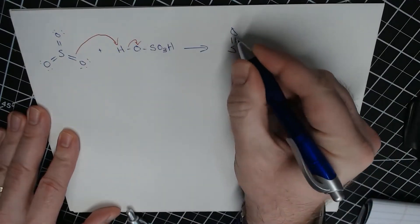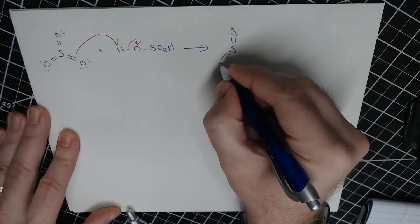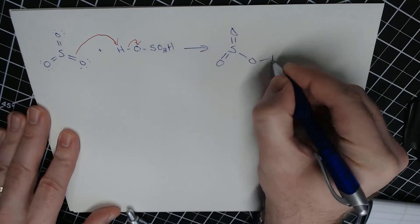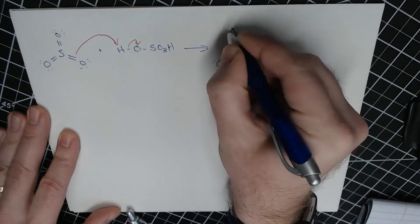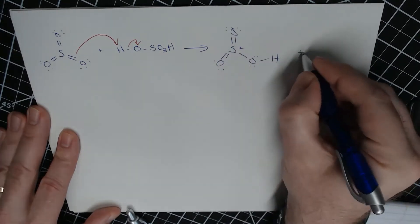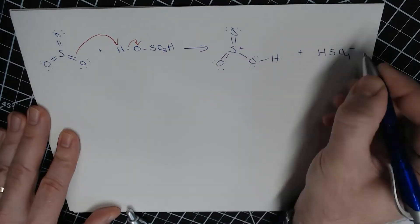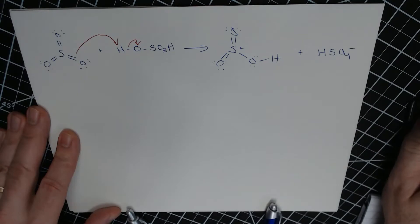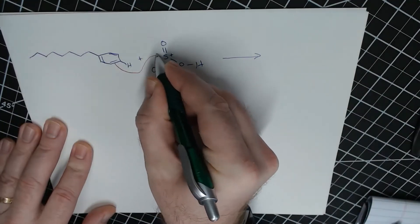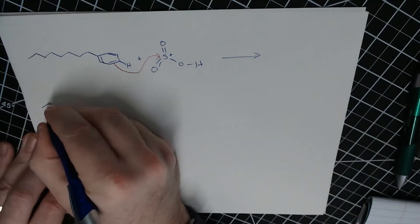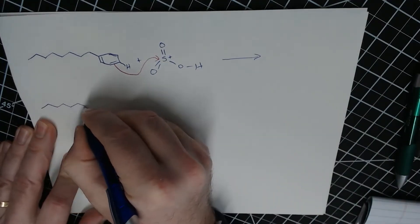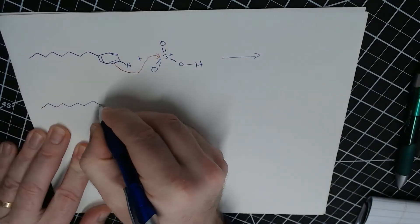First, we want to generate the electrophile. Then, we want to react the electrophile with the aromatic ring.